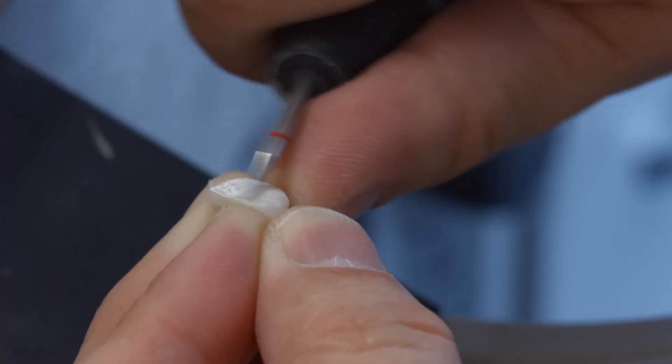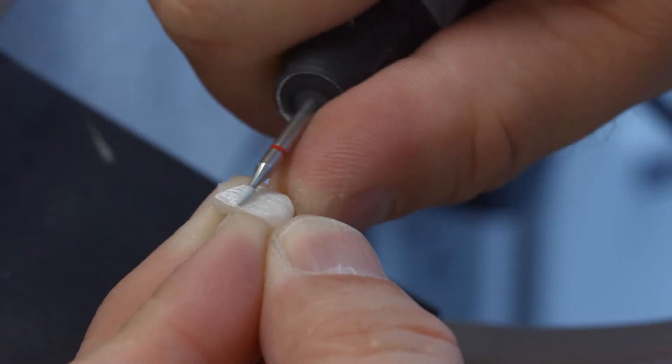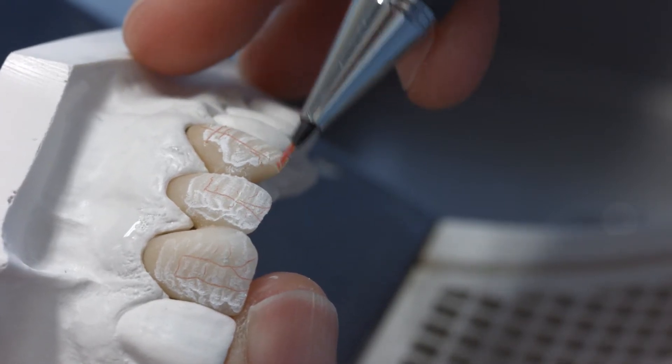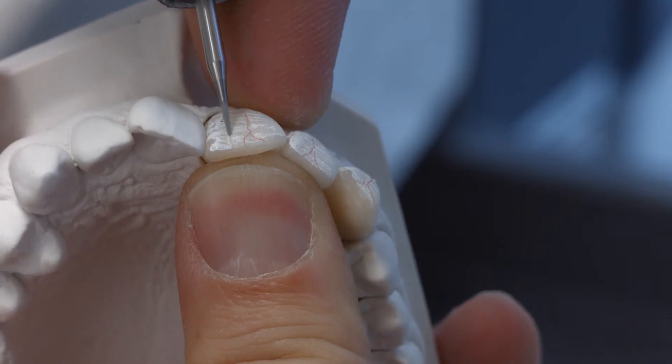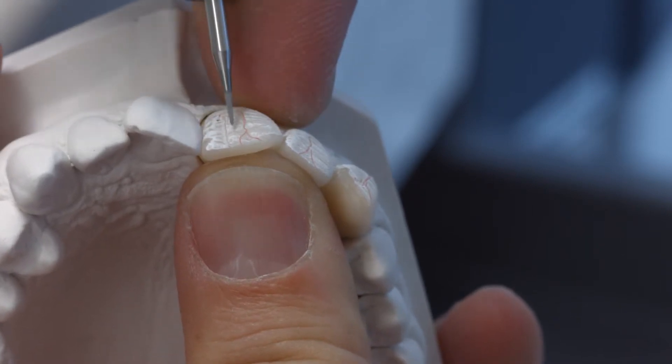After the dentin and incisal firing has been successfully conducted, the restoration is finished. Use diamond burs to give the restorations a true to nature shape and surface texture and faithfully reproduce growth lines and convex and concave areas.